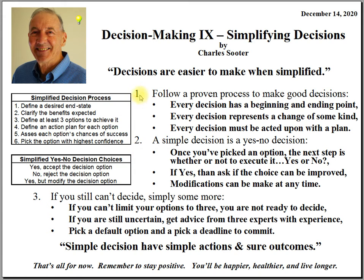So let me dive into Proposition 1: follow a proven process to make good decisions. As I've already stated, every decision has a beginning and an end point. And decisions are a lot like chess — there are a lot of moves that can be made, and a couple of moves down in the game you're going to be in a different beginning position. You can choose where you begin; you don't have to begin right where you are.